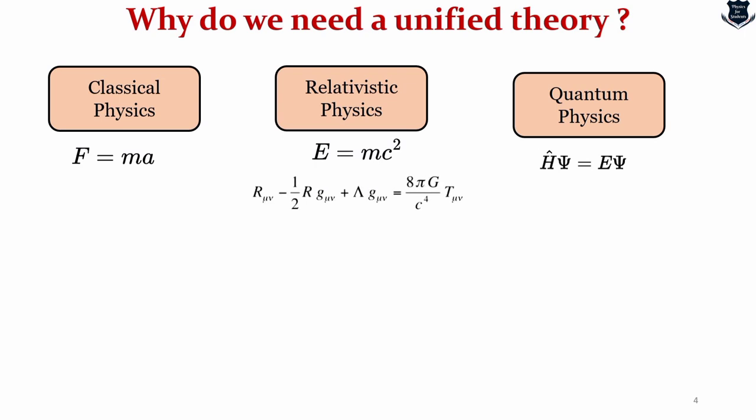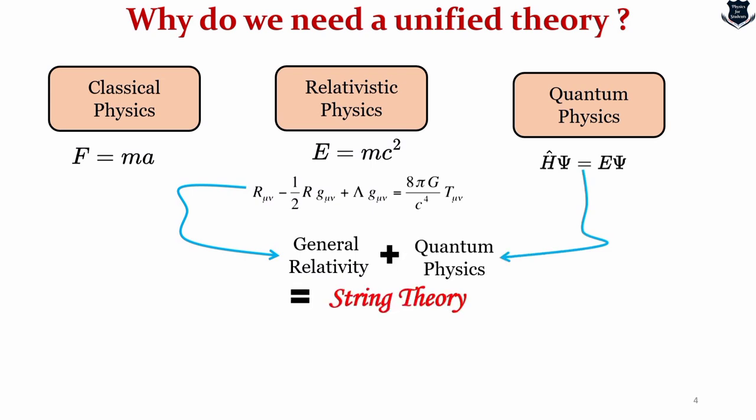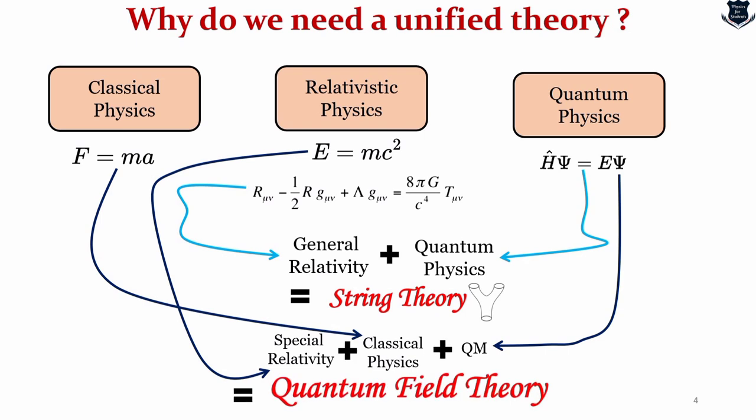This field equation you're looking at is basically general theory of relativity which says that gravity is no more a fictitious force but just a curvature of spacetime. Now if I take quantum physics and unify it with general relativity we get string theory. If I take classical physics, relativistic physics together with quantum mechanics we get quantum field theory.